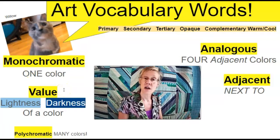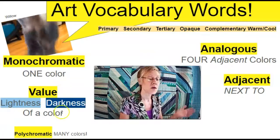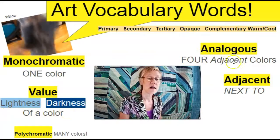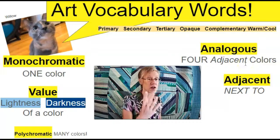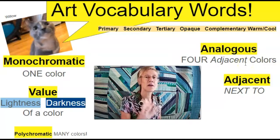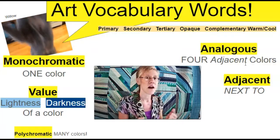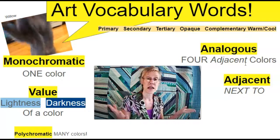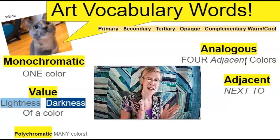Value in art class just means the lightness or darkness of any color. Analogous means adjacent colors on the color wheel.